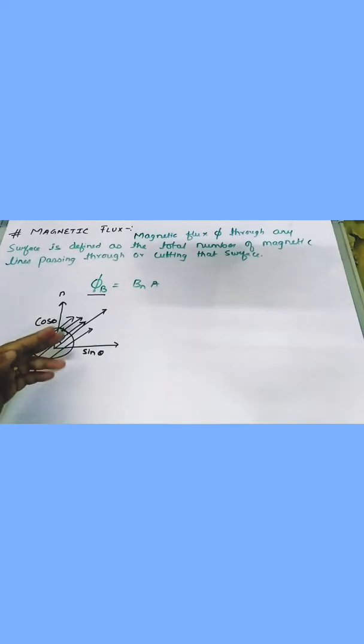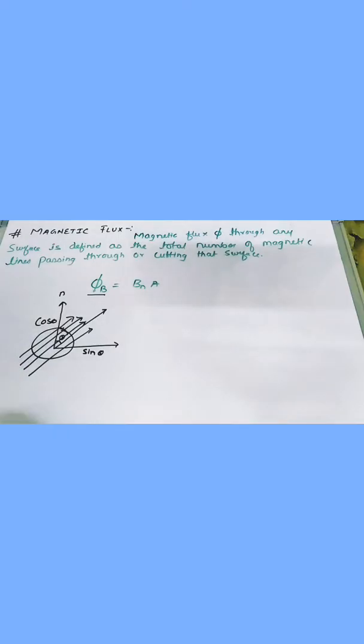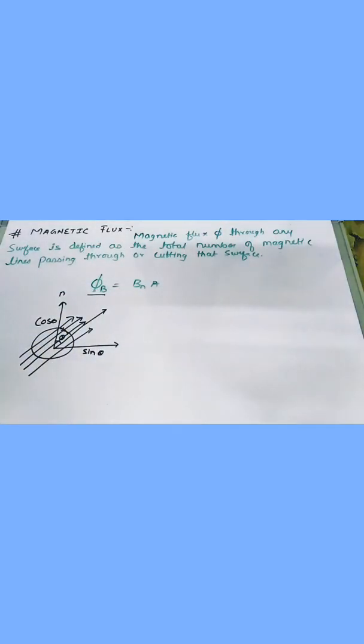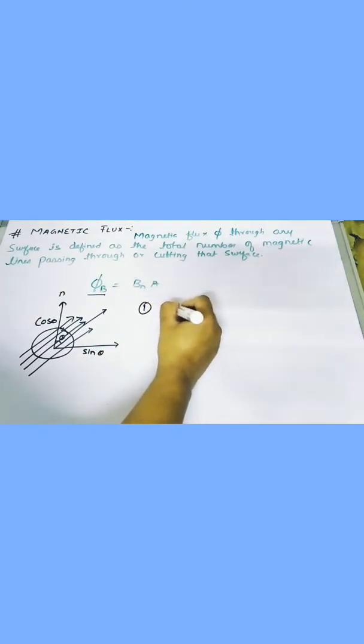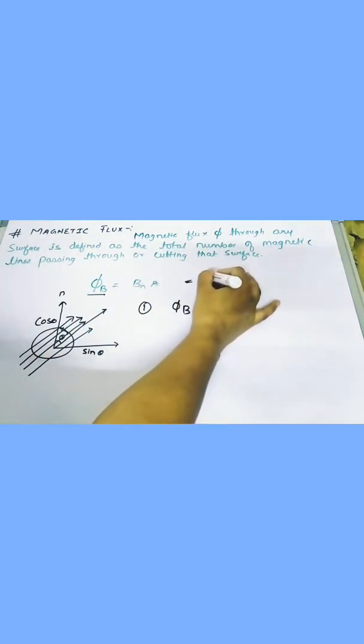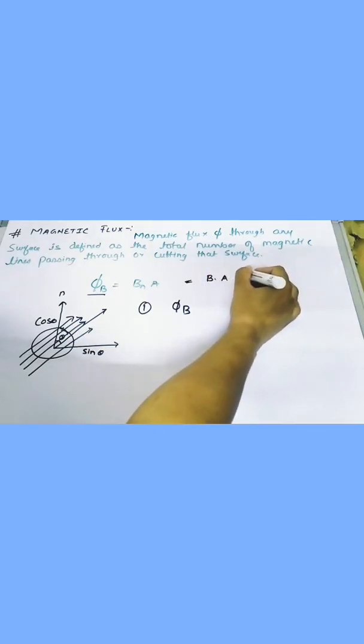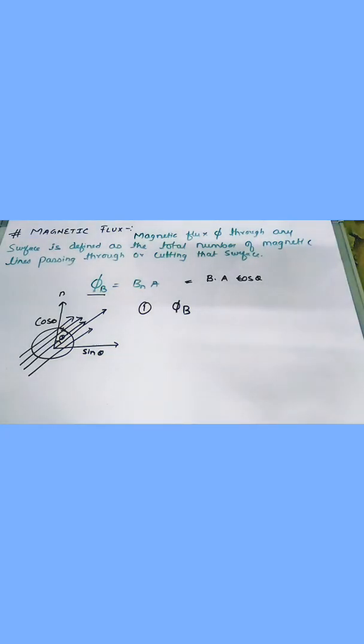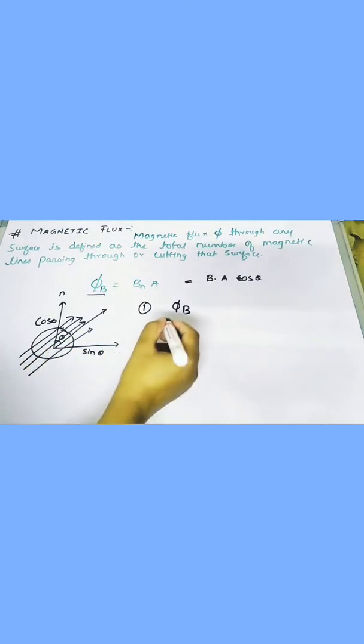When the magnetic flux changes — when it finds any obstruction or any material through which it has to pass, or there is a change in its number — this is the formula: ΦB equals BN into A. This is a cos component, so we can write ΦB equals B dot A equals BA cosθ. This is my magnetic flux. The number of field lines passing through that area is called magnetic flux.